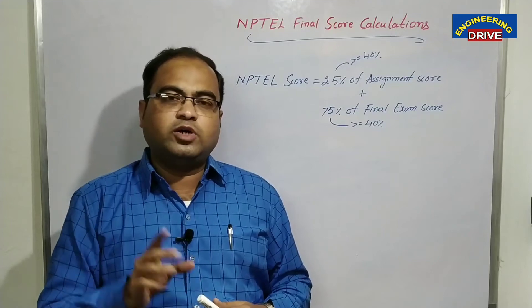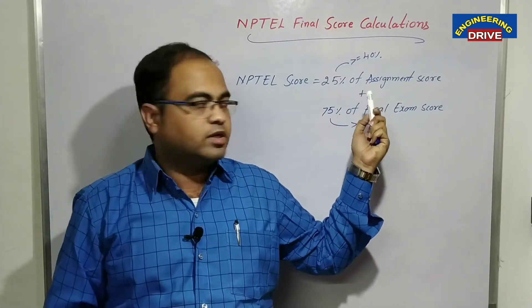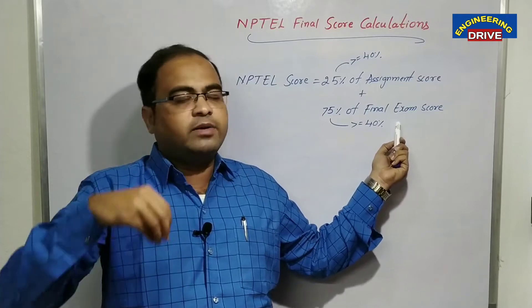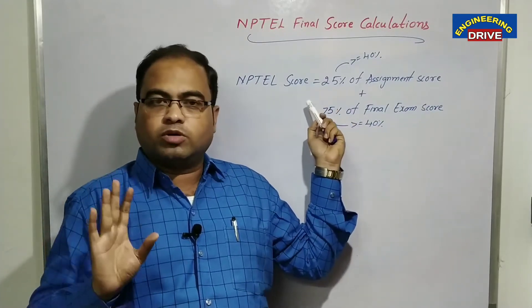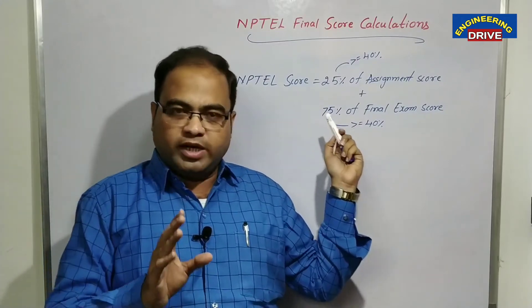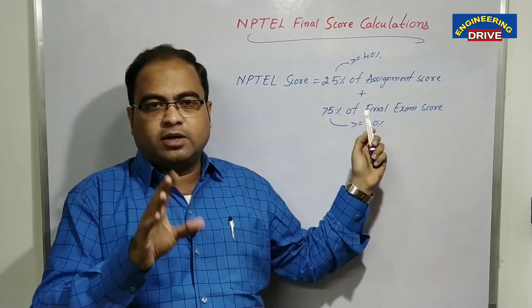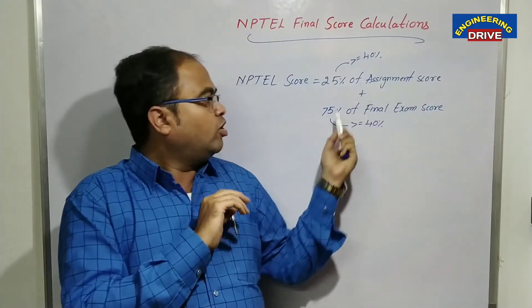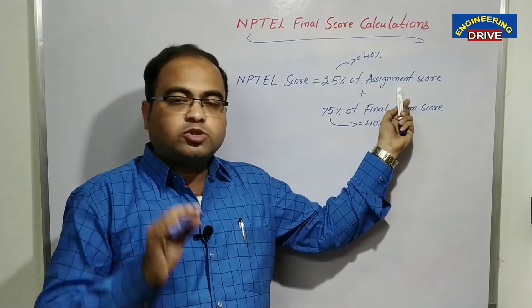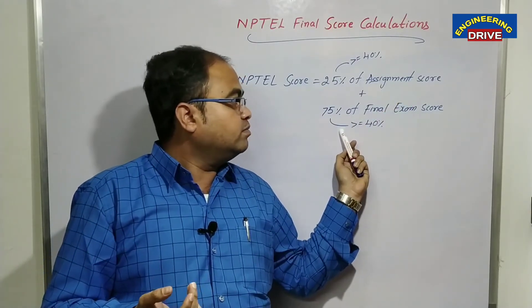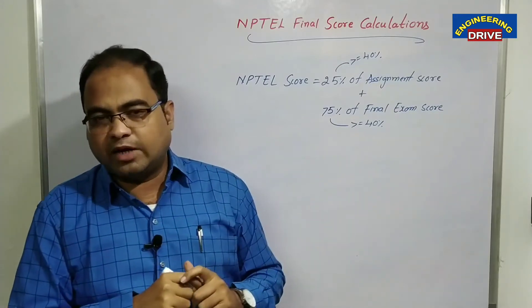Many of you will make this silly mistake: you will skip these assignments and won't submit them due to lack of awareness. You will write your final exam and get more than 40%, but even then you will be considered failed in the final NPTEL score. The condition is your overall percentage should be greater than or equal to 40, AND your assignment score should be greater than or equal to 40%, AND your final exam score should also be greater than or equal to 40%. This is Type 1 of NPTEL calculation.